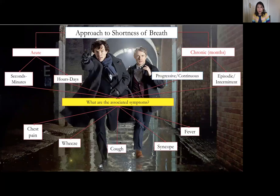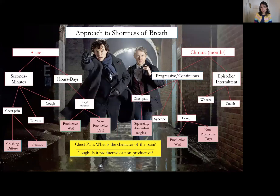Presence of fever should make you think of an infective picture, such as pneumonia, tuberculosis, or COVID. It is important to ask about chest pain to rule out myocardial infarction, pneumothorax, and PE, which may all be life-threatening depending on severity — though PE can often present with shortness of breath alone, with tachycardia on ECG as the only abnormal sign. Once you have established the timeline, onset, and associated symptoms, clarify the character of those associated symptoms. If there is a cough, ask whether it is productive, as this further divides your differential.